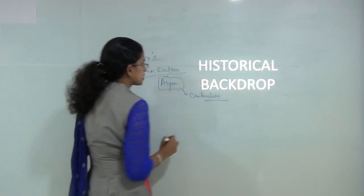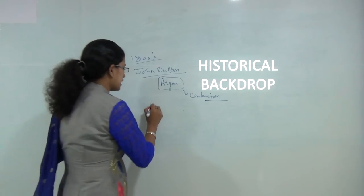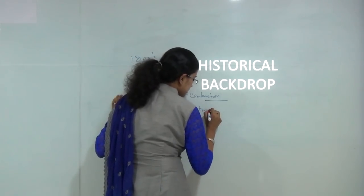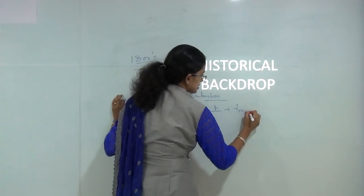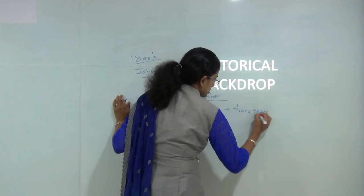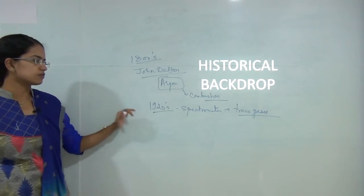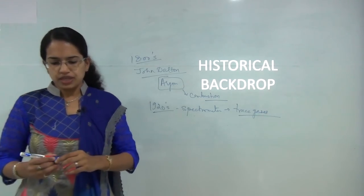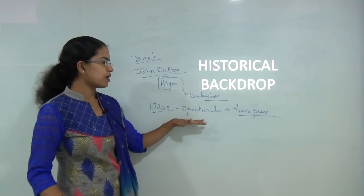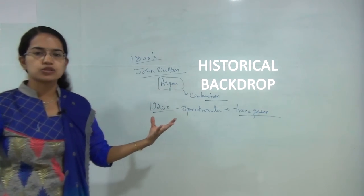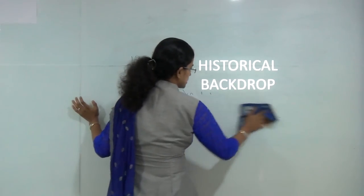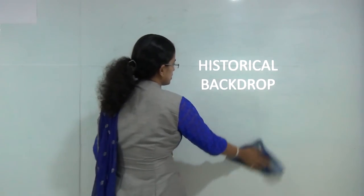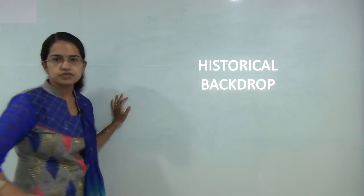It was only after the 1920s that the spectrometer was discovered, and with these spectrometers, trace gases were discovered. Gases found in small concentrations in the atmosphere — like ozone, carbon dioxide, and methane — were discovered after the invention of the spectroscope.